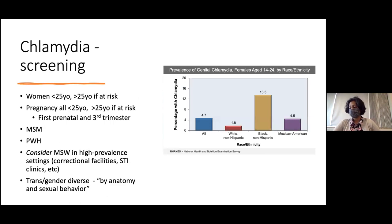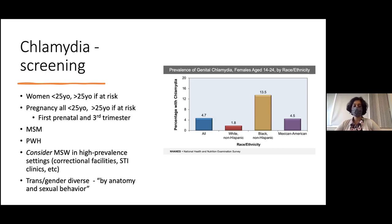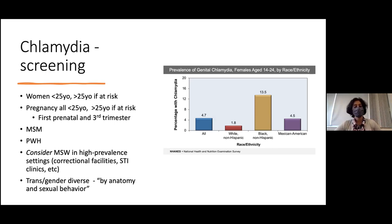The CDC recommends chlamydia screening in all women under 25 due to extremely high prevalence, and in women over 25 if at risk — such as having a new sex partner, more than one sex partner, or a partner diagnosed with an STI. Vaginal screening is recommended in women, with rectal screening discussed via shared decision-making, since women can have rectal chlamydia even without endorsing anal sex. In pregnancy, all pregnant women under 25 should be screened, and over 25 if at risk, at the first prenatal visit and in the third trimester.